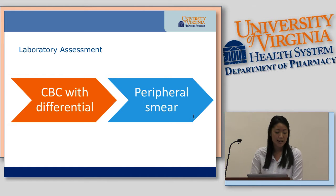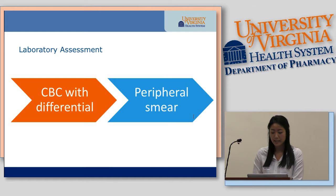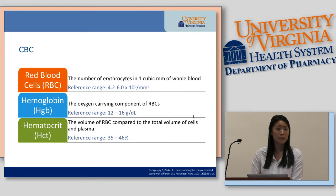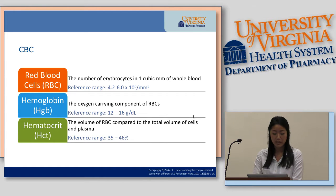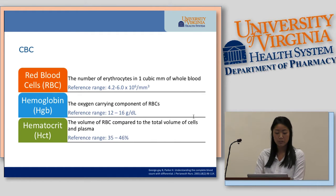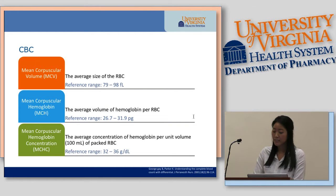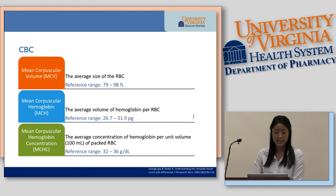When classifying anemia, you first look at the CBC and the differential, and you can also look at the peripheral smear. Reviewing the components of a CBC: red blood cells is the number of erythrocytes in one cubic millimeter of whole blood; hemoglobin is the oxygen-carrying capacity of red blood cells; hematocrit is the volume of cells compared to the total volume of cells plus plasma; MCV is the average size of a red blood cell; MCH is the average volume of hemoglobin per red blood cell; and MCHC is the average concentration of hemoglobin per unit volume of packed red blood cells.